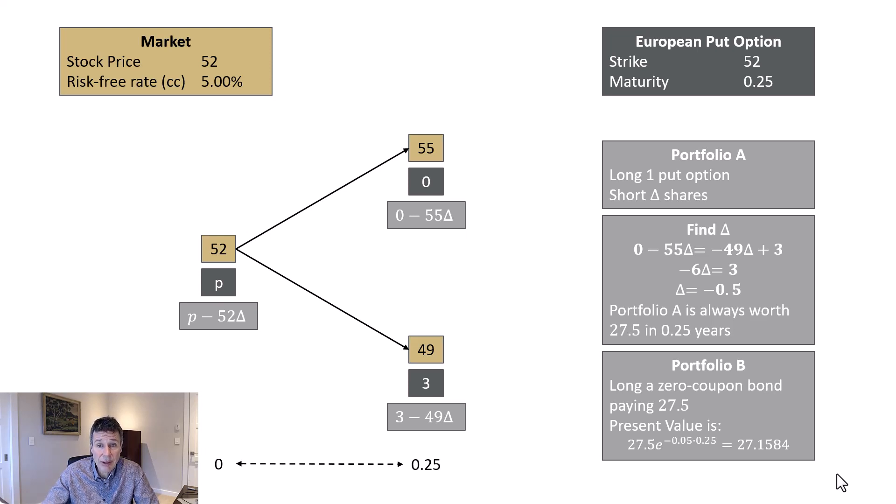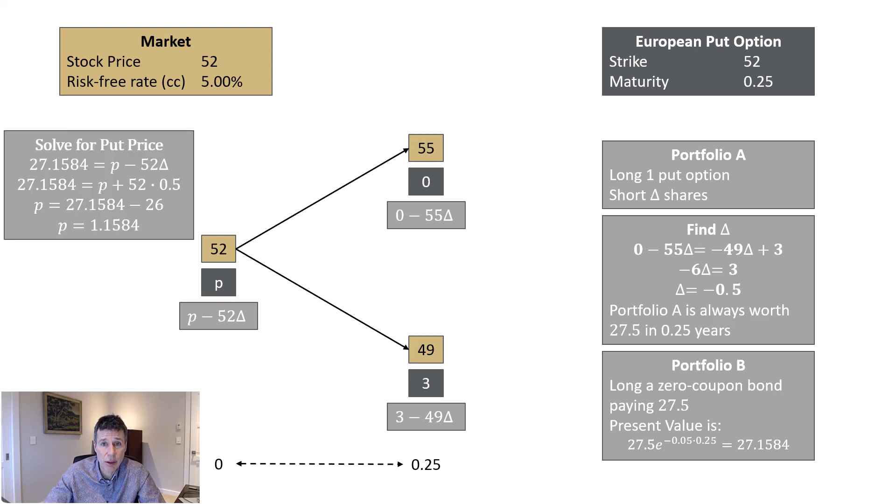The other part of risk-neutral pricing that we have to know is that portfolio A and portfolio B, in all possible outcomes of the world, stock goes to 55 or stock goes to 49, those portfolios are equal in value. Nothing can happen in our stylized world between today and a quarter of a year. Since we know these portfolios are of equal value in the future, and nothing can happen between today and that future, we know they're of equal value today. Thus, 27.1584 equals P minus 52 delta. We substitute in negative 1/2 for that delta, and we get 27.1584 equals P plus 26.